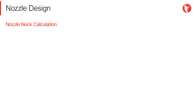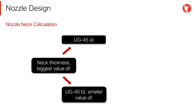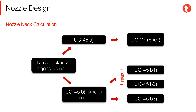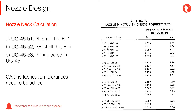Once this information is gathered, the procedure indicated in paragraph UG-45, shown in the picture, must be followed. Even when the procedure may seem intricate, it is very simple and straightforward. It is about establishing minimum requirements for different design conditions.